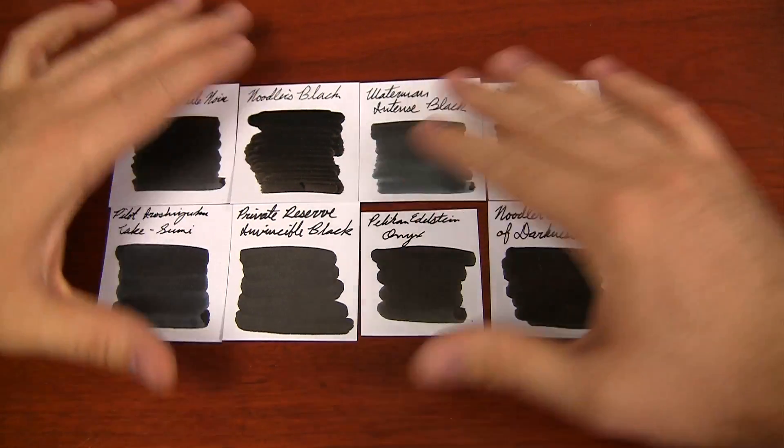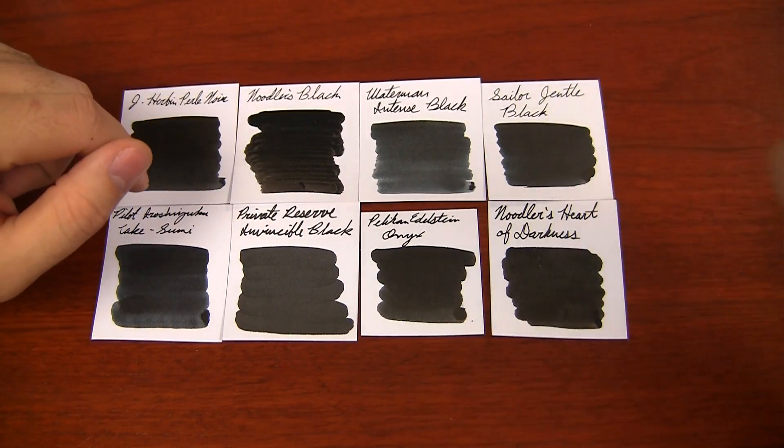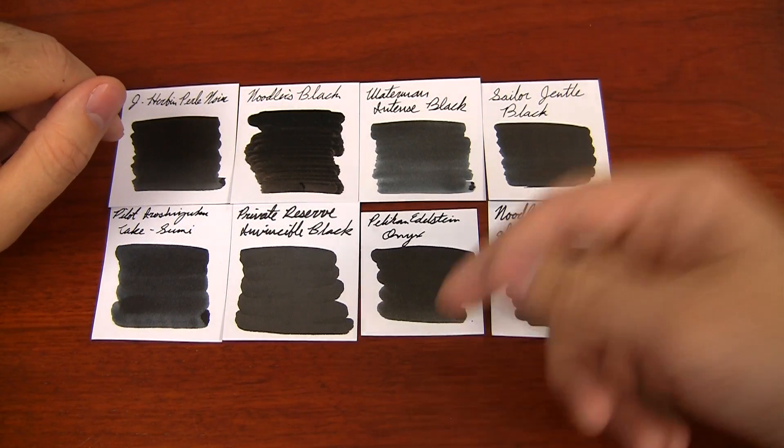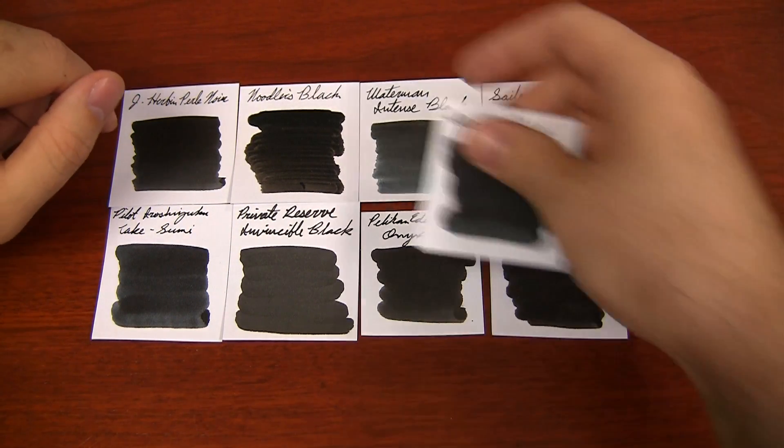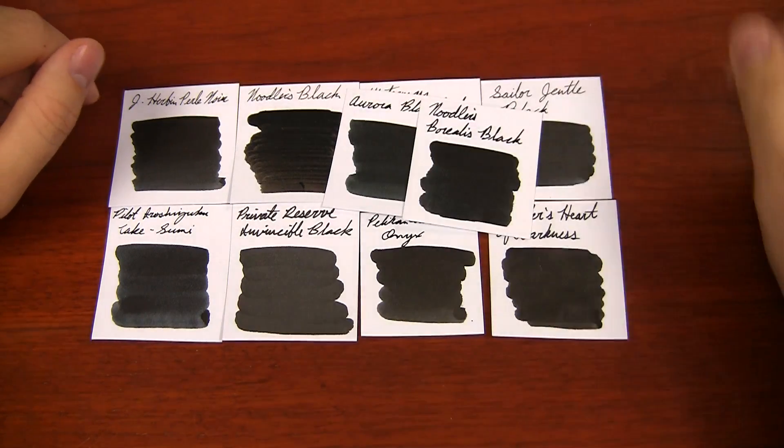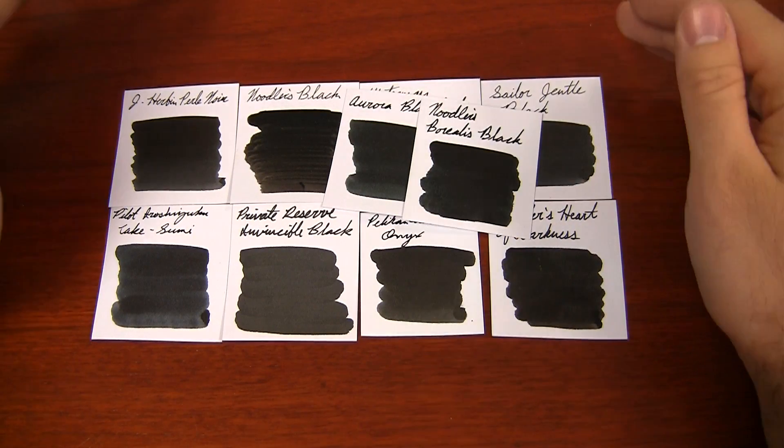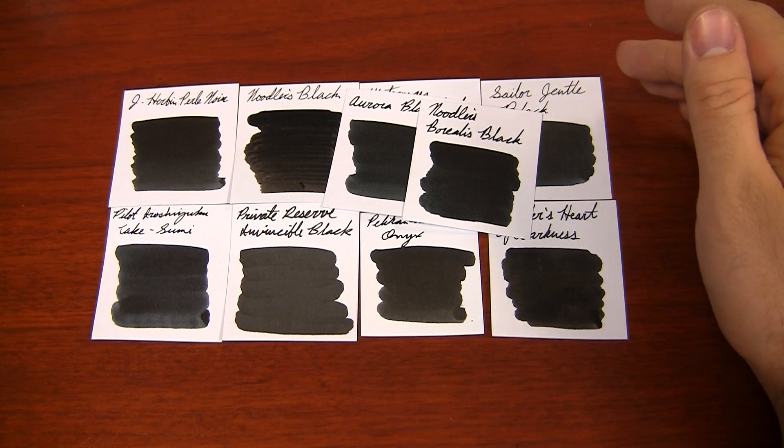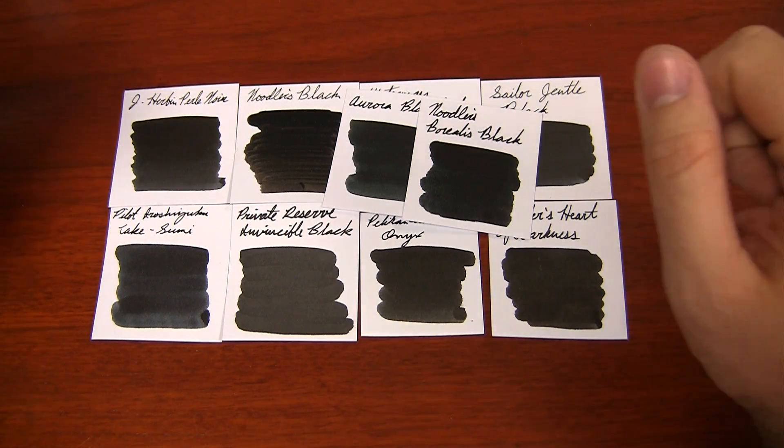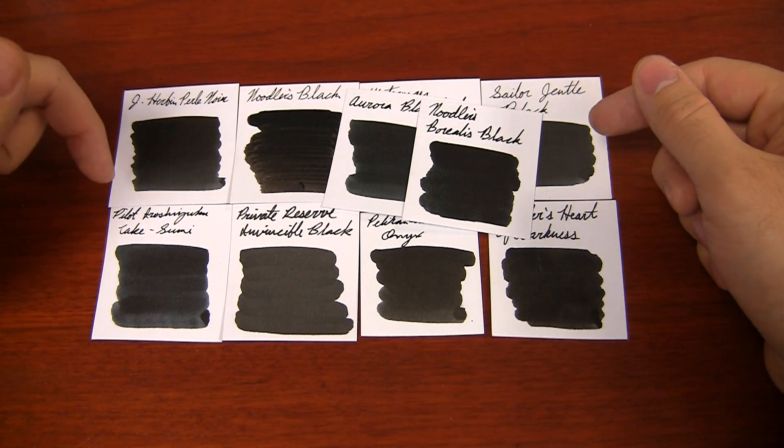I really kind of pulled out some of the darkest. Like Noodler's Black, Heart of Darkness. Edelstein Onyx is pretty much there. Aurora Black, Borealis. These are like some of the absolute blackest black inks that you can get in the fountain pen world. And Takesumi will throw some punches in that fight.